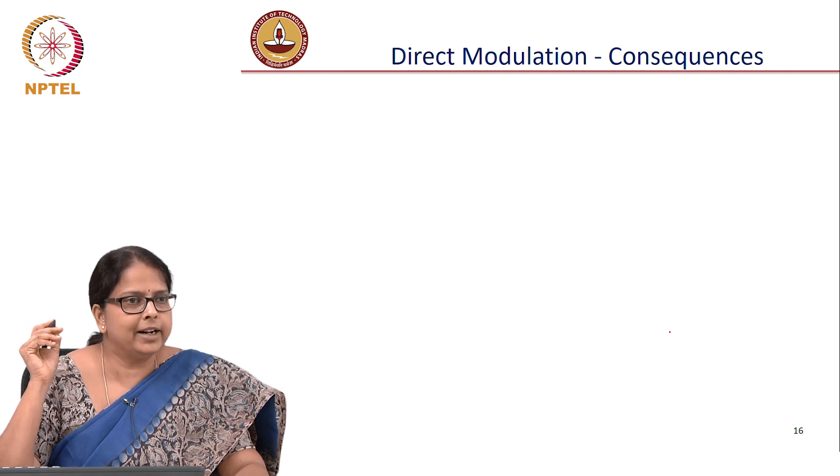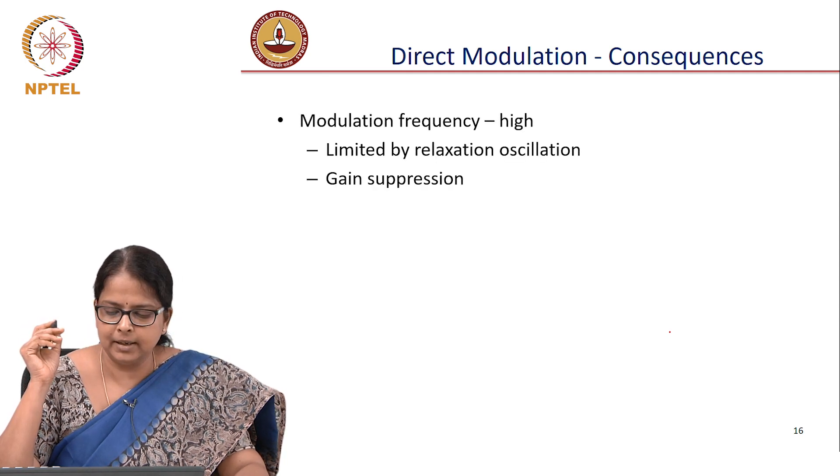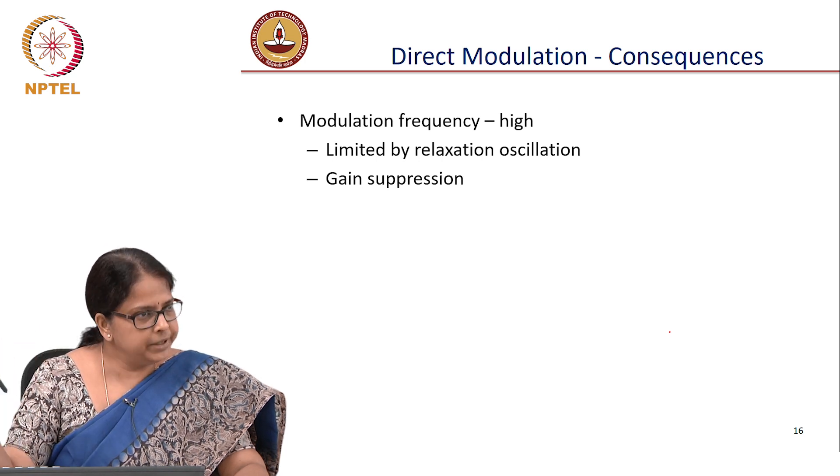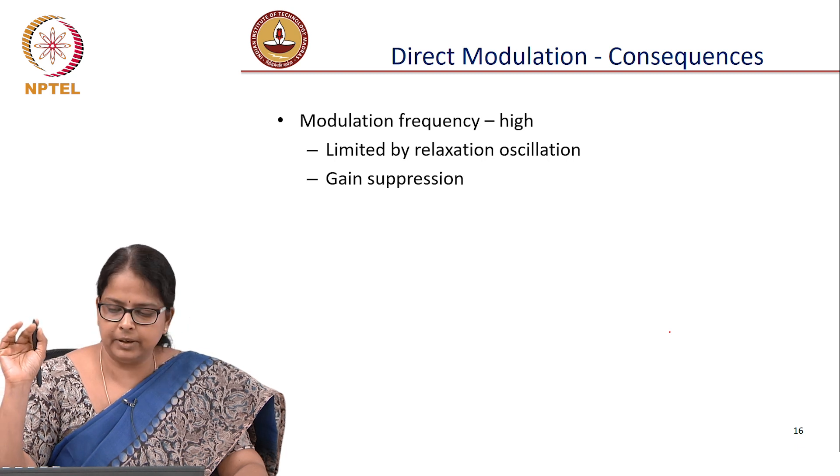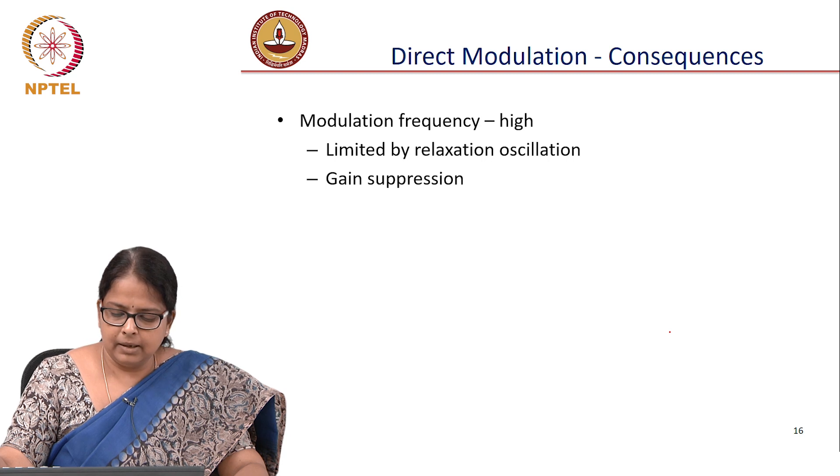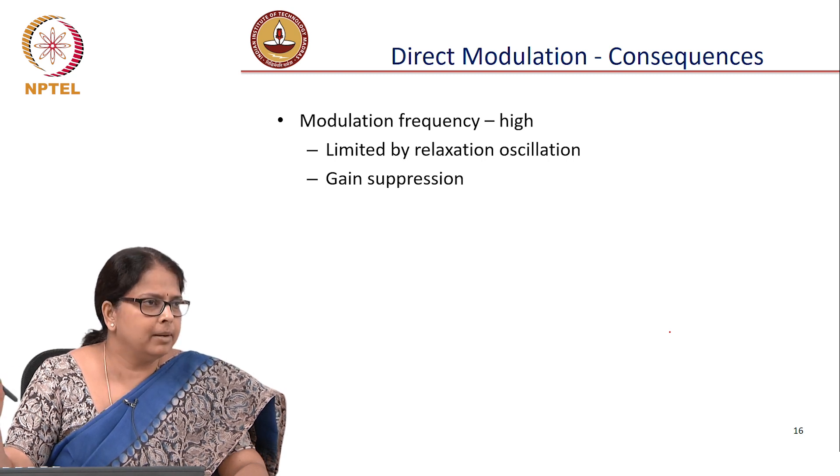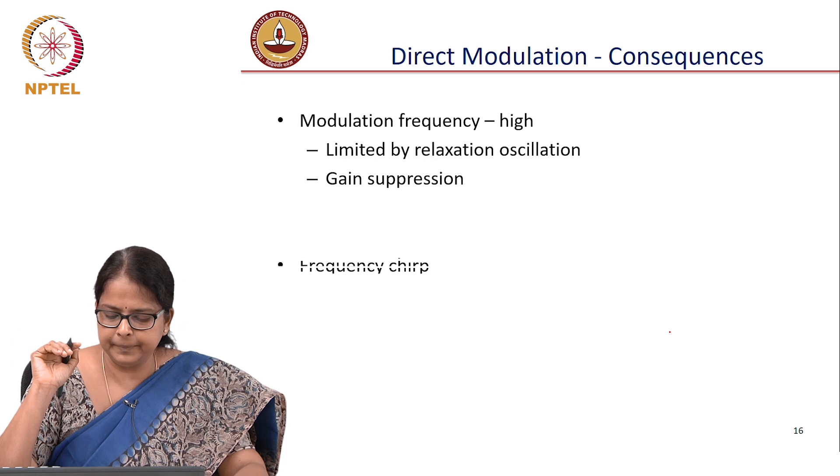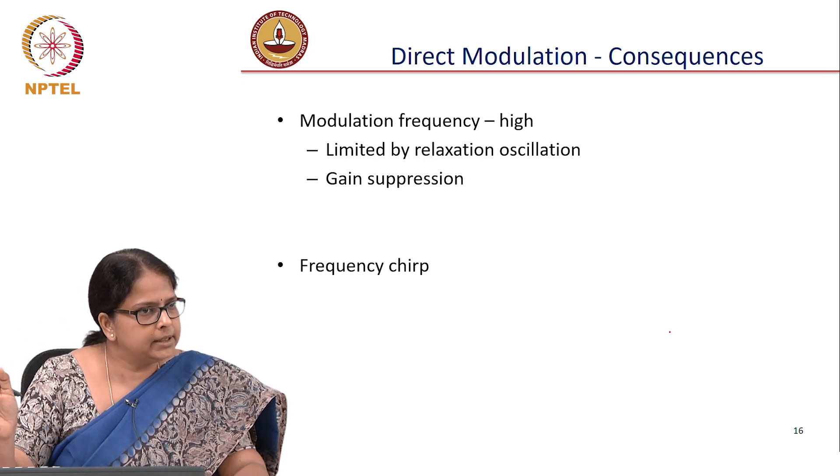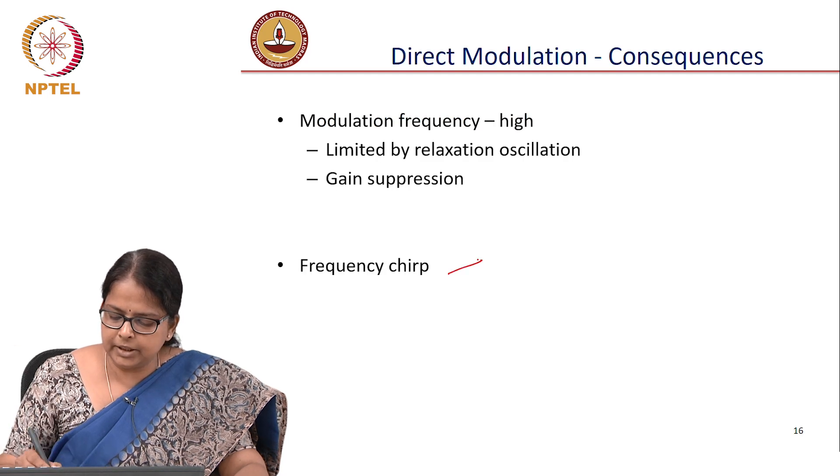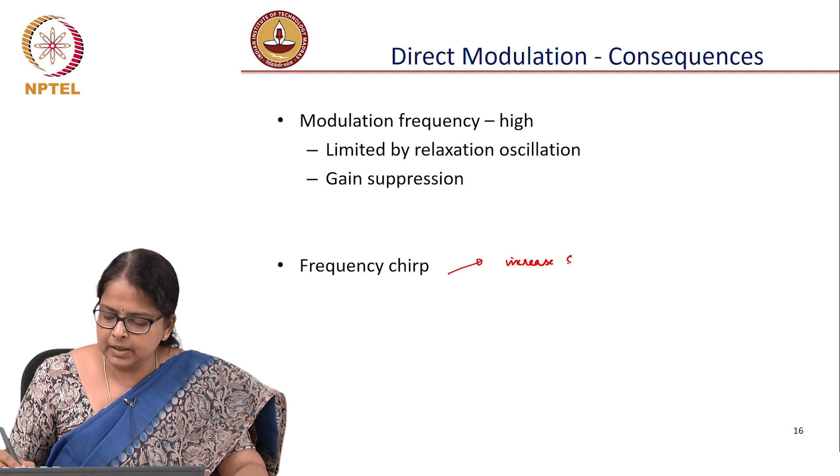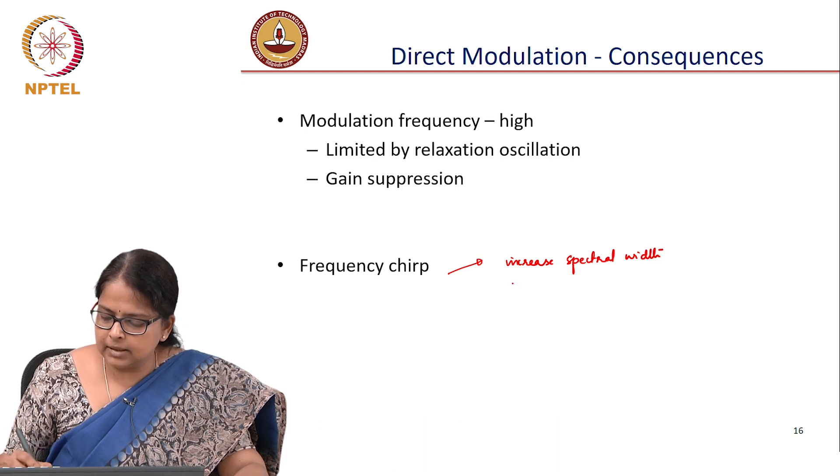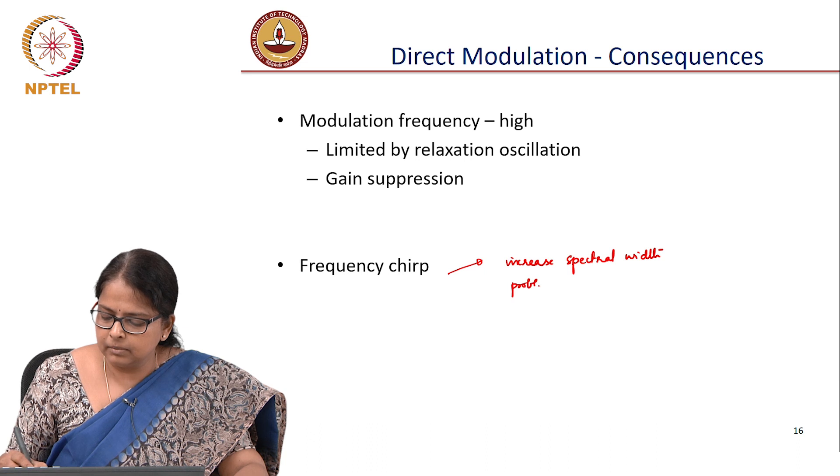Consequences of direct modulation, we are just summarizing what the consequences are. Modulation frequency is high, that is good for a laser. We got a large modulation frequency. It is limited only by the relaxation oscillation. There is some gain suppression phenomena which we are not talking about, but this will happen only when it is operating at very very high current. So we will not talk about it. The second consequence is frequency chirp. You can modulate, but the frequency chirp will increase spectral width and this may be a problem for considering dispersion.